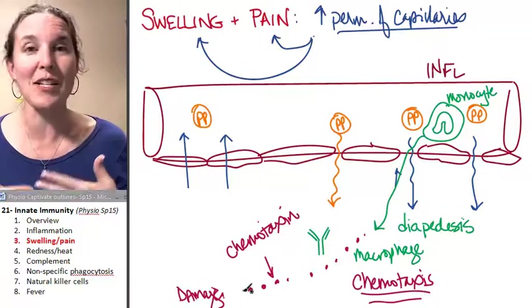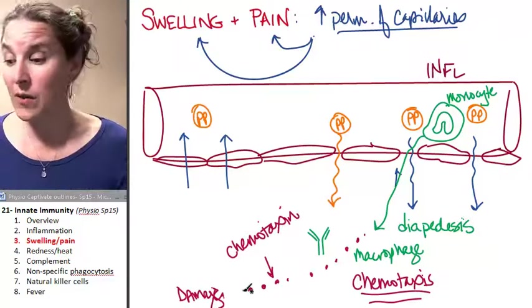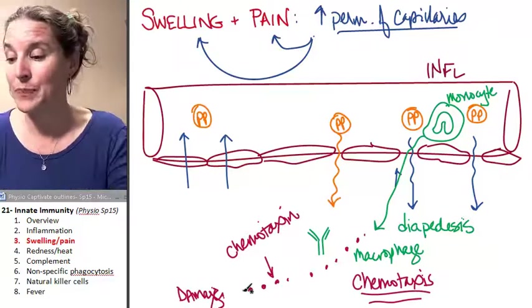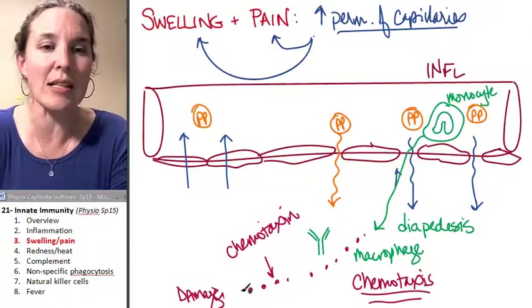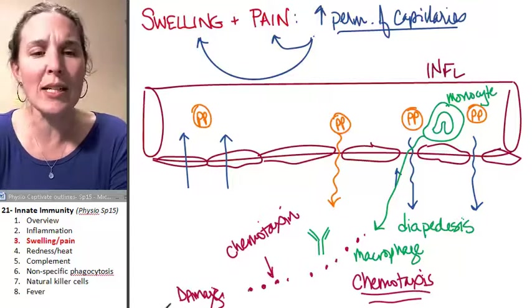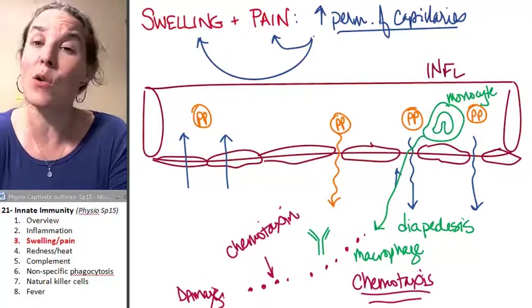If your capillaries are more permeable, all of these things are more possible. All right. That deals with two of our signs. What about redness and heat? Let's talk about how we get those signs.